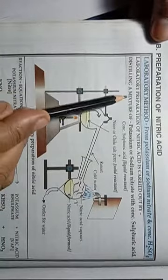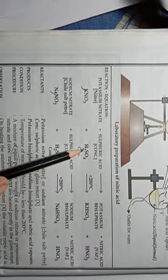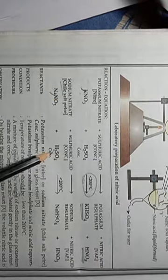Laboratory preparation of nitric acid is carried out by distilling a mixture of potassium or sodium nitrate with concentrated sulfuric acid. The reaction equation: KNO3 (nitre) reacting with concentrated H2SO4 at less than 200°C gives potassium bisulfate plus nitric acid. Similarly, sodium nitrate (Chile saltpeter) with concentrated H2SO4 at the same temperature gives sodium bisulfate plus nitric acid. The temperature condition - less than 200°C - is very important.